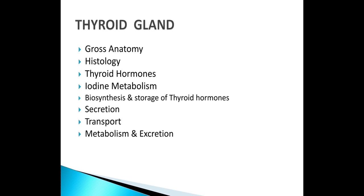The learning objectives are: we need to know the gross anatomy, histology, the microscopy and macroscopic features, and the thyroid hormones which are T3 and T4. T3 is triiodothyronine and T4 is thyroxine. The basis for synthesis is iodine metabolism, with biosynthesis, storage, secretion, transport, and metabolism, with applied aspects.